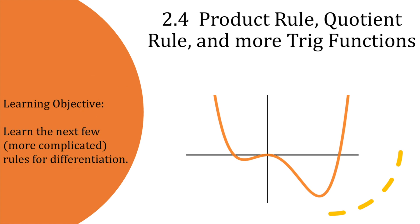Hello and welcome back. We're finishing up chapter 2 with some more rules for differentiation, but before we dive in, let's review what we learned last time. If you have a function that's just a constant, say y equals 4, the derivative of that is 0.